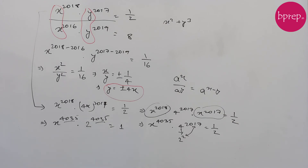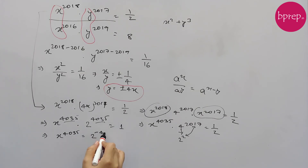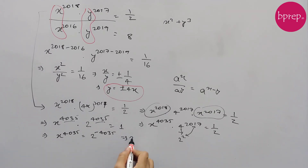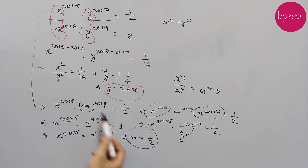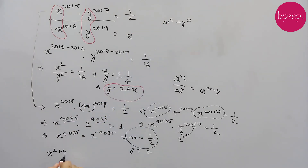From x to the power 4035 equals 2 to the power minus 4035, we can cancel the power 4035 on both sides to get x equals 2 to the power minus 1, so x equals 1/2. Since we assumed y equals 4x, we get y equals 4 times 1/2 equals 2. Therefore, x squared plus y cubed equals (1/2)² plus 2³ equals 1/4 plus 8 equals 33/4.